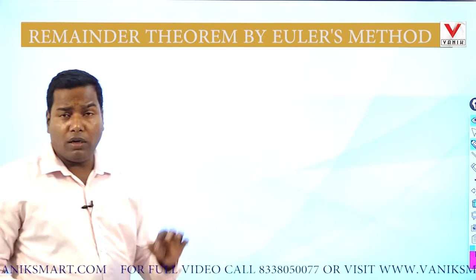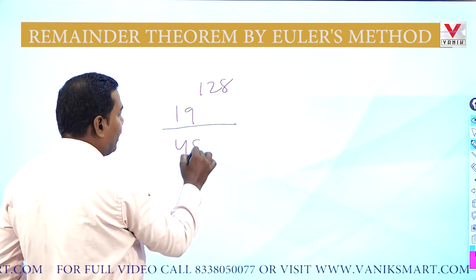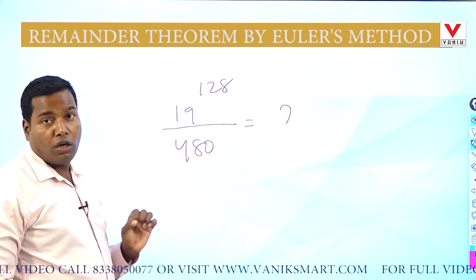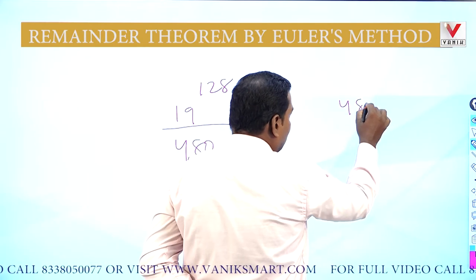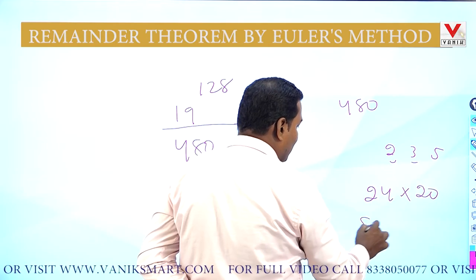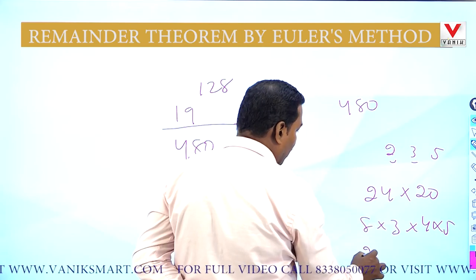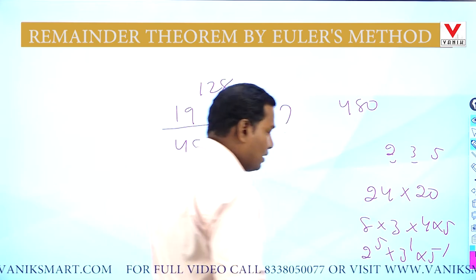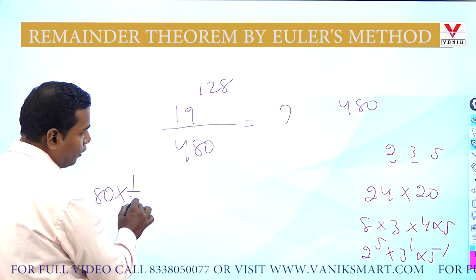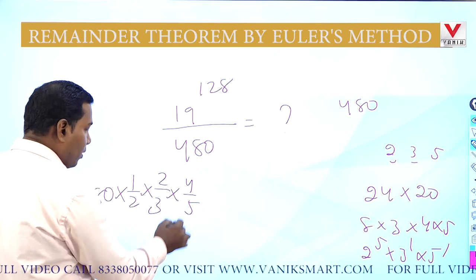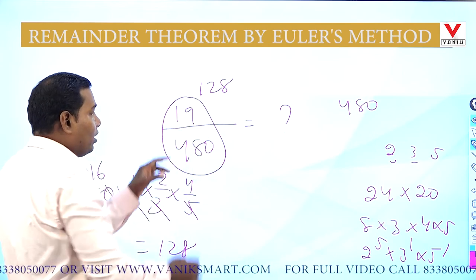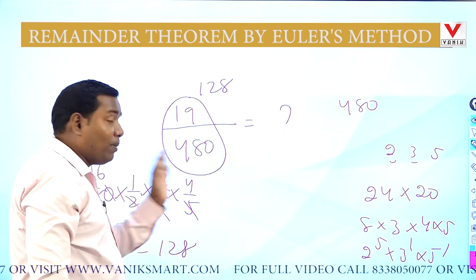Another example: 19¹²⁸ divided by 480 — what is the remainder? The prime factors of 480 are 2⁵ × 3 × 5, so the prime factors are 2, 3, and 5. The Euler's number of 480 is 480 × (1/2) × (2/3) × (4/5) = 128. Since 19 and 480 are co-prime and 128 is the Euler's number of 480, the remainder is 1.